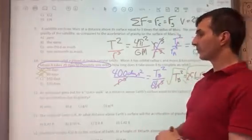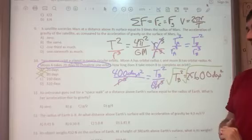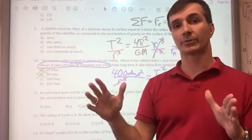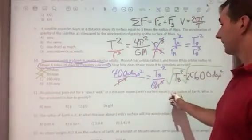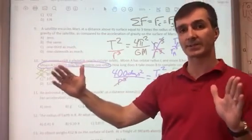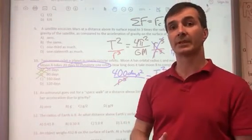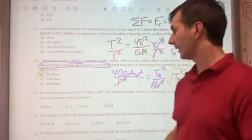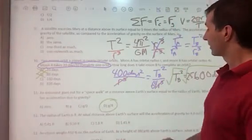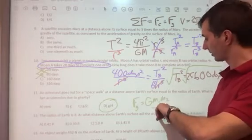Number 11: we go for a spacewalk at a distance above Earth's surface equal to the radius of Earth. What is the acceleration due to gravity? On the surface you're one Earth radius away; now we're another Earth radius away, so we're twice as far from the center. We're one-fourth as heavy, which means our gravitational field strength will be one-fourth as much.